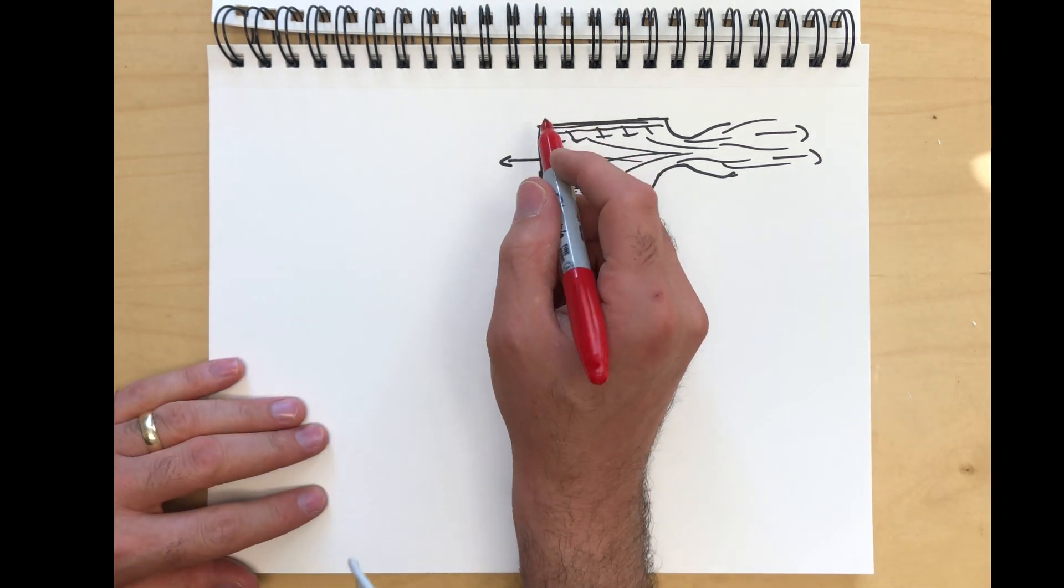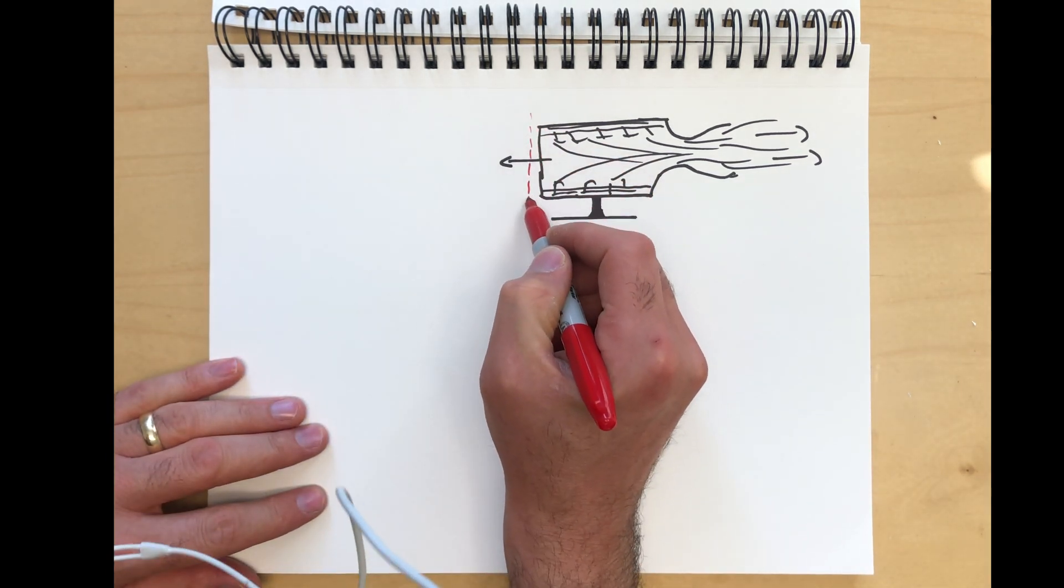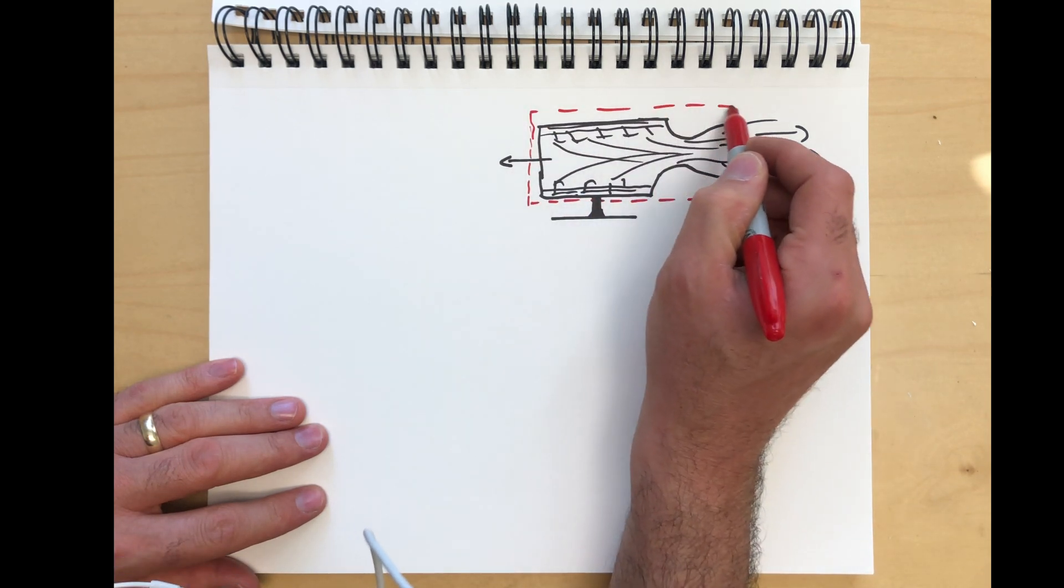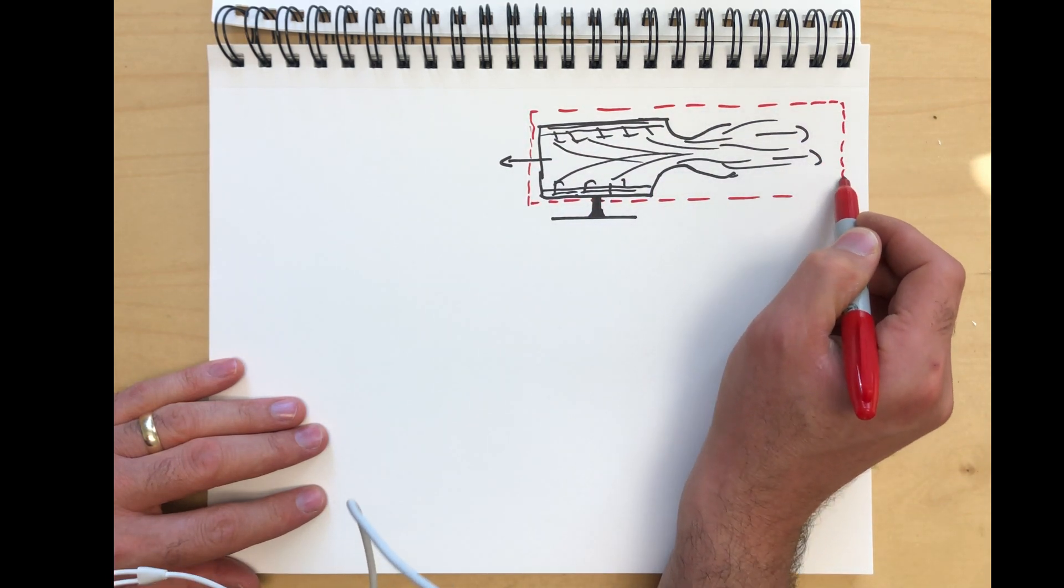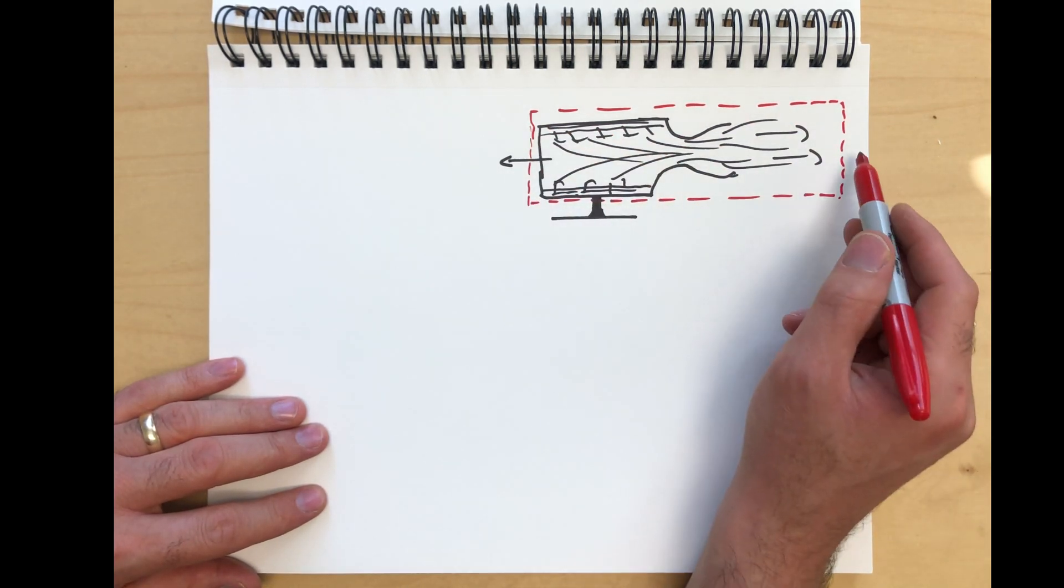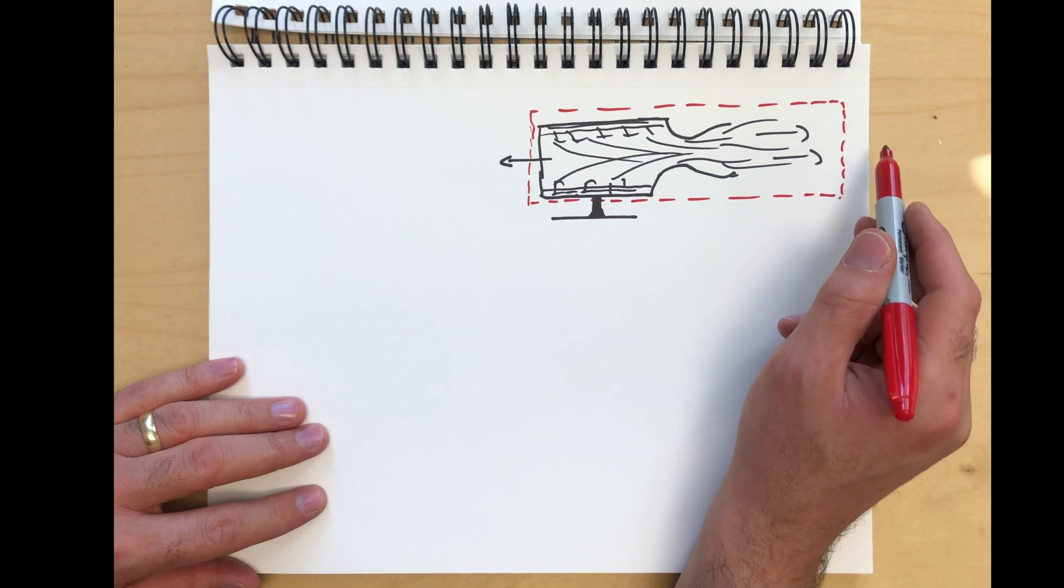So for this, we're going to take a control volume. It looks like this. And we're going to pick the exit surface far away so that the pressure force on the surface is nearly equal to the atmospheric pressure.